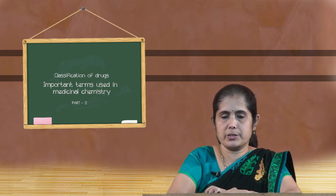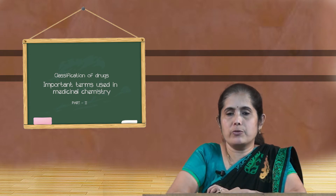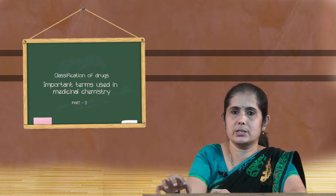The next term in medicinal chemistry is pharmacodynamics. This deals with the quantitative study of the biological and therapeutic effects of the drug on the body, or what the drug does to the body. It elucidates the mechanism of action of a drug and correlates the drug action with its chemical structure. So pharmacokinetics is what the body does to the drug, while pharmacodynamics is what the drug does to the body. The pharmacological action of the drug is studied under pharmacodynamics.